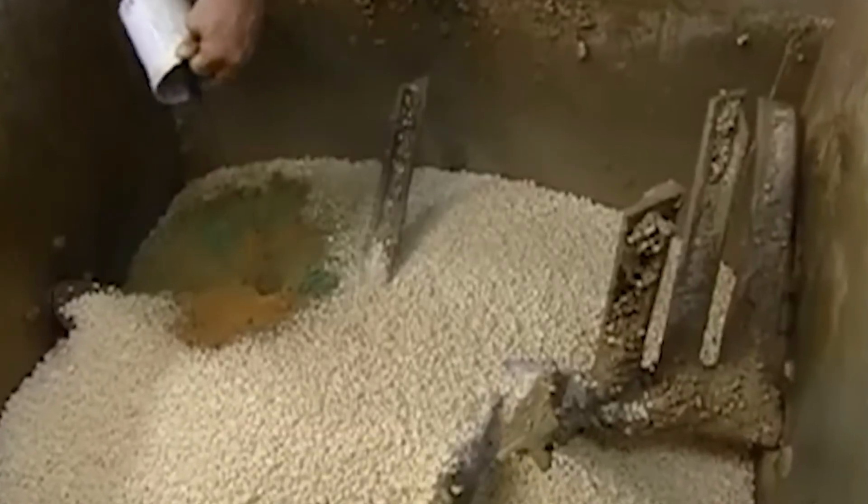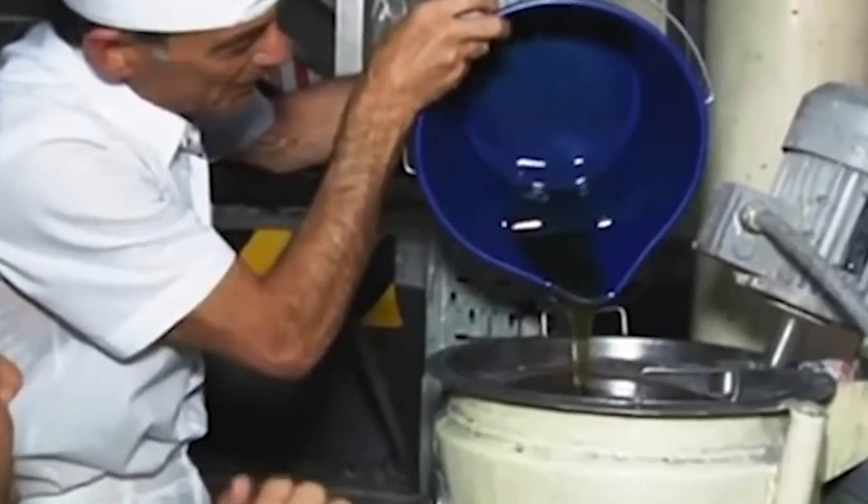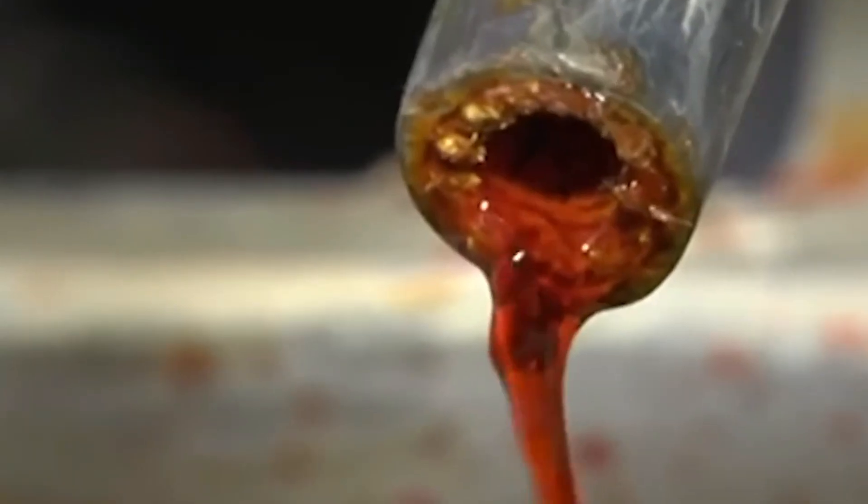The soap ribbons are rolled, mixed, and pressed again and again through heavy steel rollers that hum steadily across the production floor. This process, called milling, refines the texture, squeezes out excess moisture, and blends the ingredients evenly, making the soap smoother, denser, and more uniform.